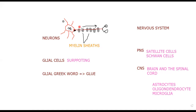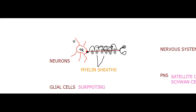The action potential jumps from one gap to the next — jumping along the axon from node to node — until it reaches the terminal end where it triggers release of information. This movement of electrical impulse jumping along is called saltatory conduction.